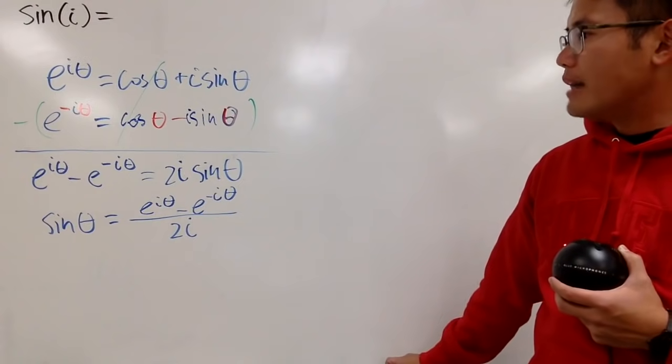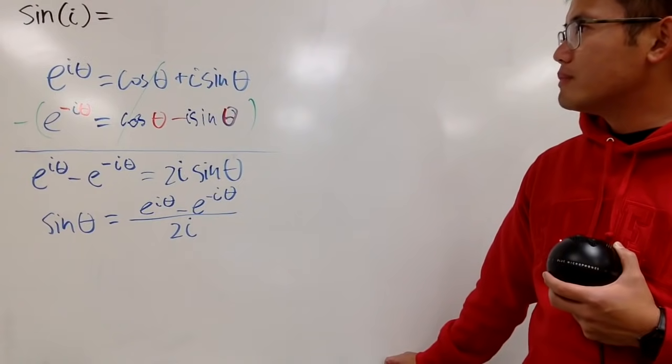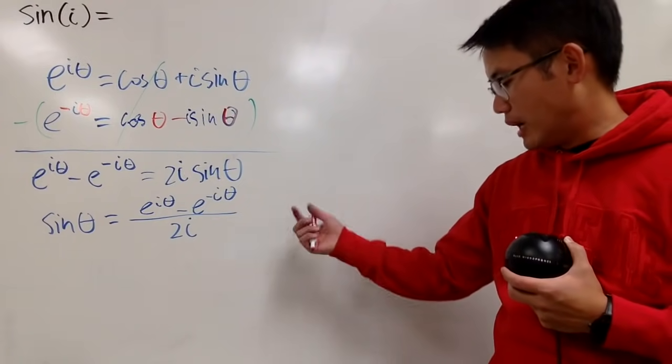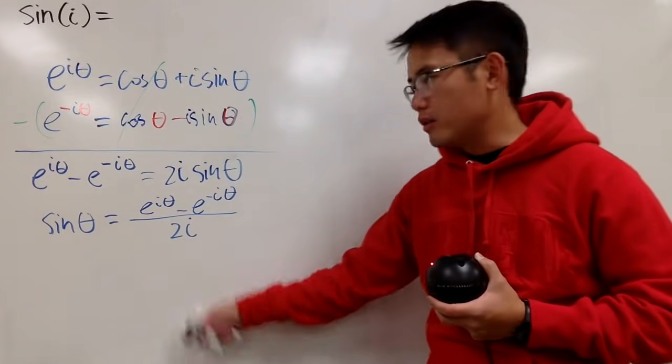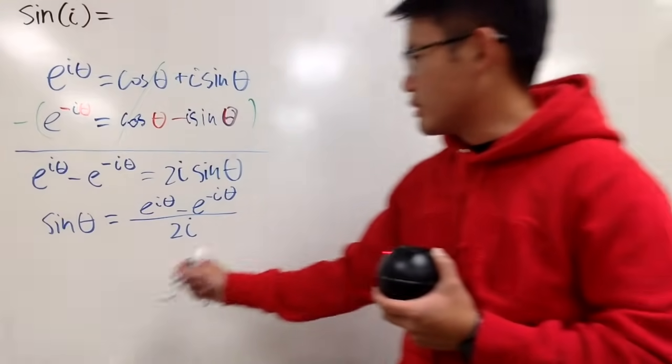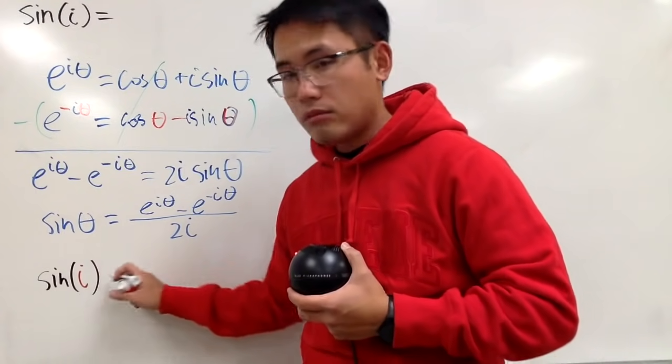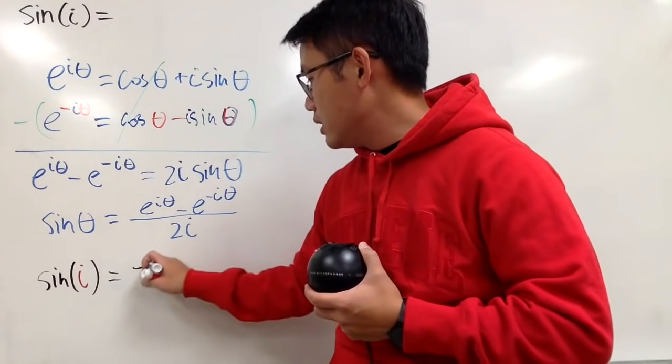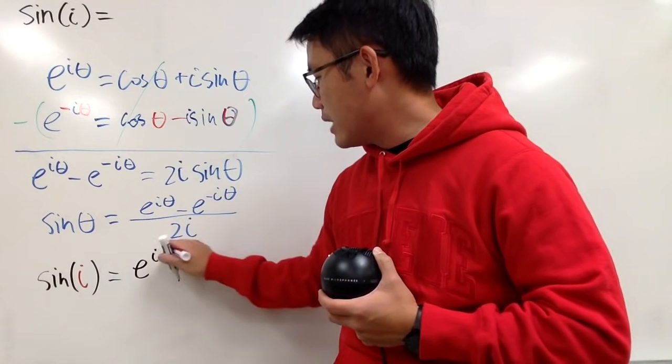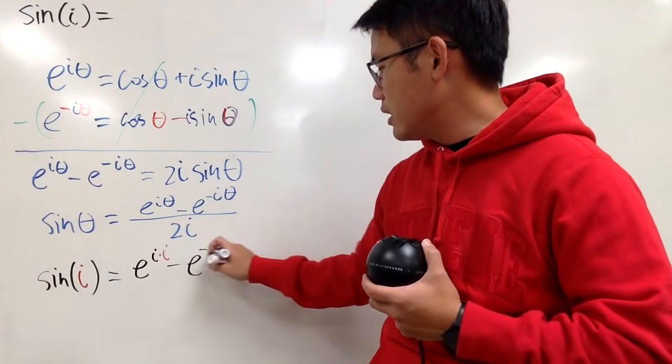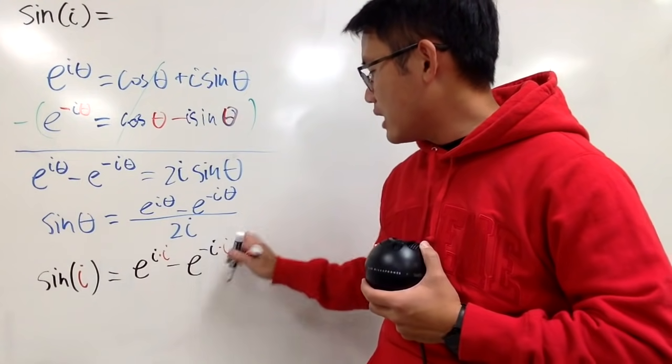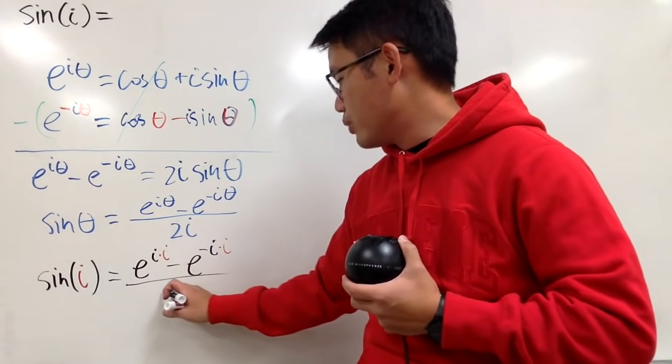Well, I need to get the i in there, so all I have to do is just plug in i into theta. So I will just do that right here, sine of i. Just put i here. And you get e to the i times i, because theta is i, and then minus e to the negative i times i, and then divide it by 2i.